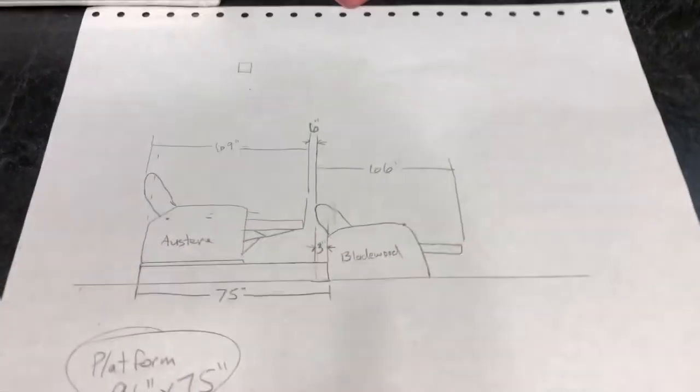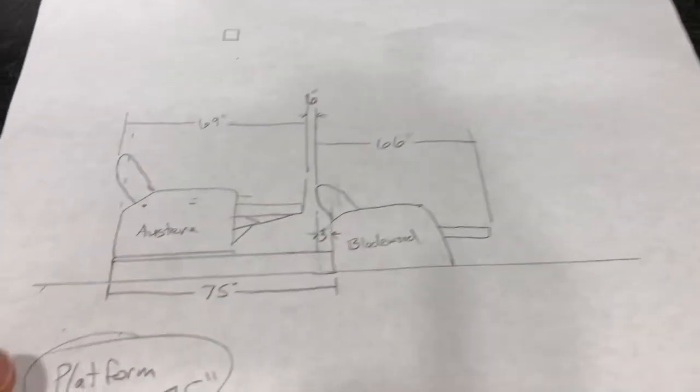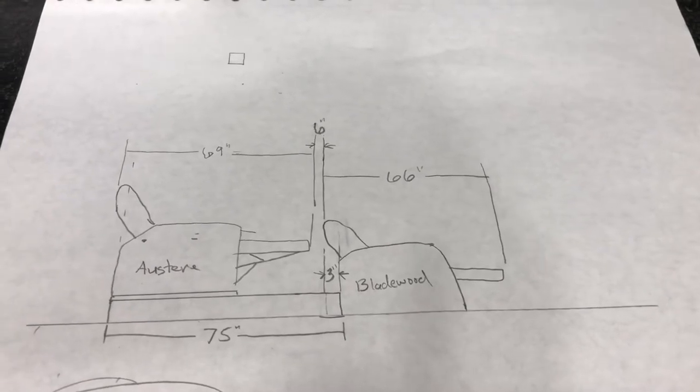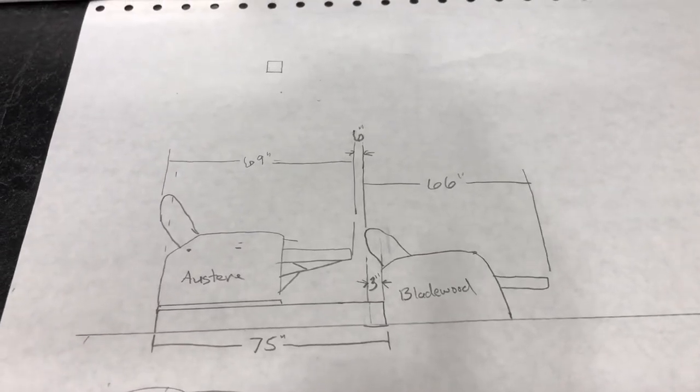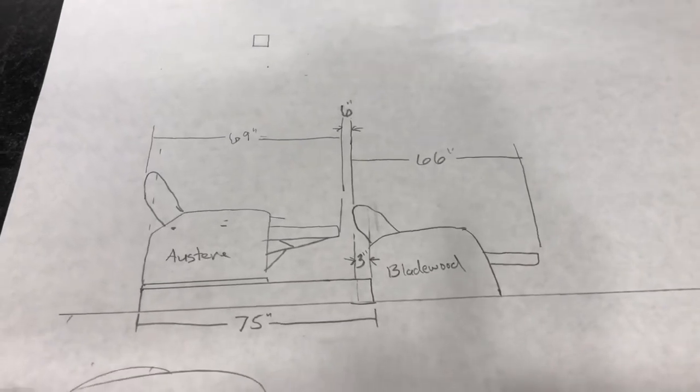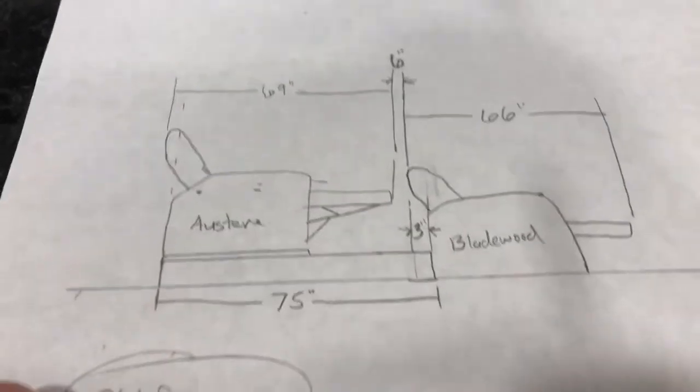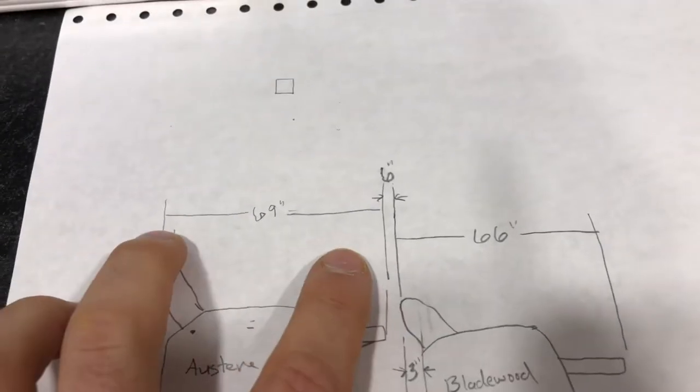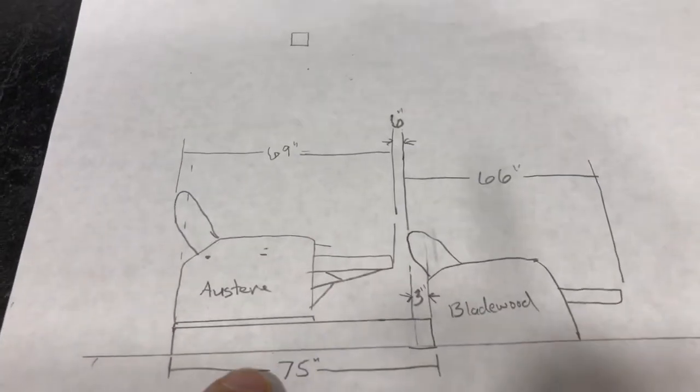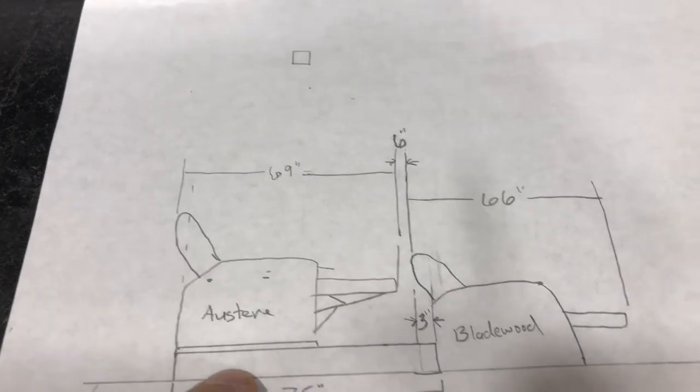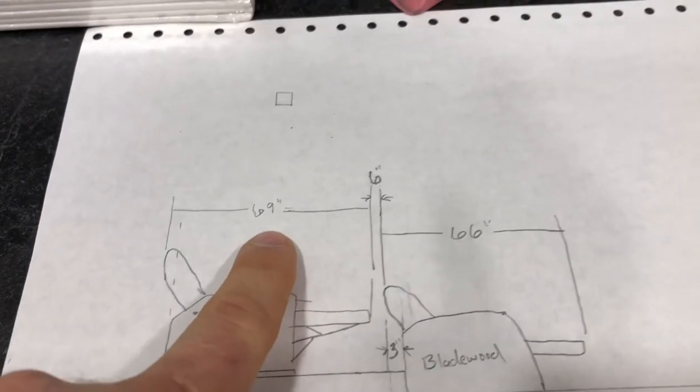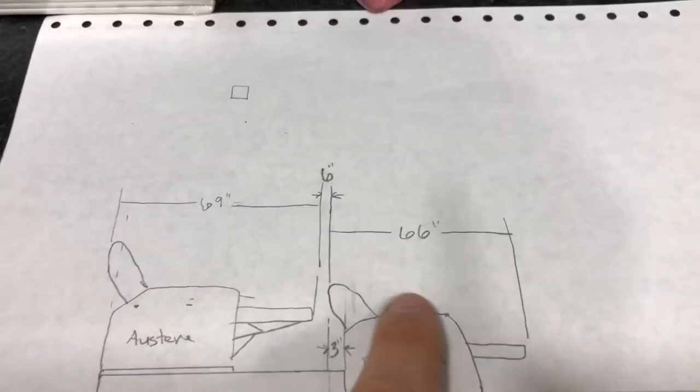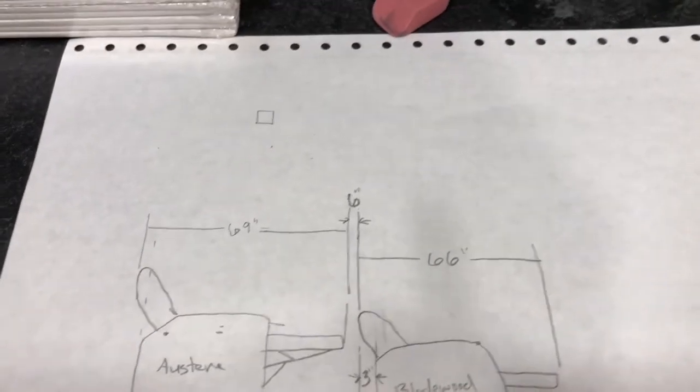One of the first things you want to do to get the size for your platform is draw up what your current furniture or the furniture you're going to be using will look like, most importantly in its reclined state. So what I have here, I looked at the specs for what we're going to be buying. The important dimension here is the fully reclined length. For the sofa that's going to be on the back, on the platform, that's a reclined length of 69 inches, and then the front one, a reclining chair, has 66 inches fully reclined length.